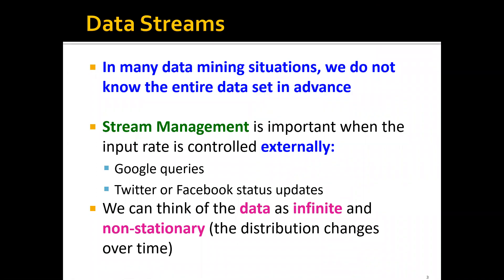In many data mining situations we actually do not know the entire data set in advance. The data is an unlimited stream coming from the user side, which is a different setting from what we discussed before where we have a fixed data set. Stream management is important when the input rate is controlled externally — for example, Google queries are controlled by users, not Google itself, and similarly Twitter and Facebook status updates are controlled by their users.